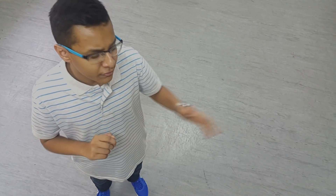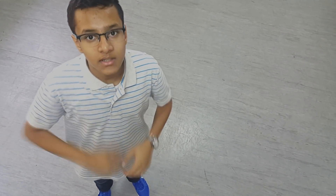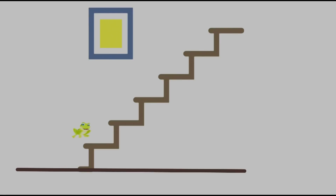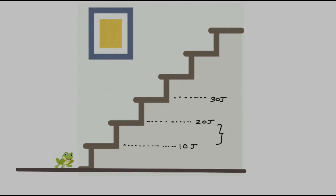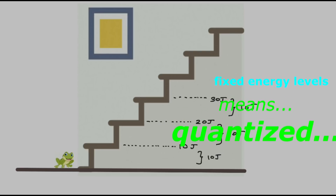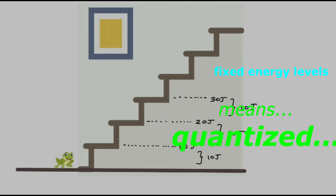Now, if you are confused with the idea of quantization, let me give you a simple example of a frog which tries to climb a staircase. To reach the next level — for example, from ground to first step — it needs 10 joules of energy, and from first to second it also needs 10 joules of energy, and so on. But if it does not have enough energy, it stays on the same level, trapped, and has fixed energy.